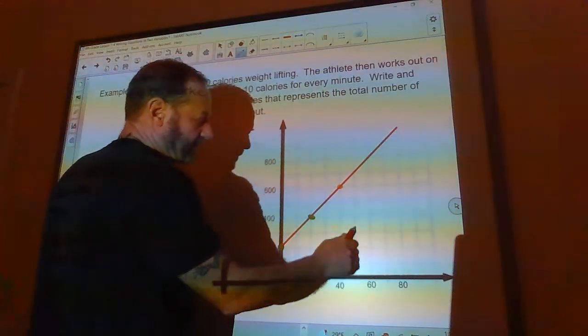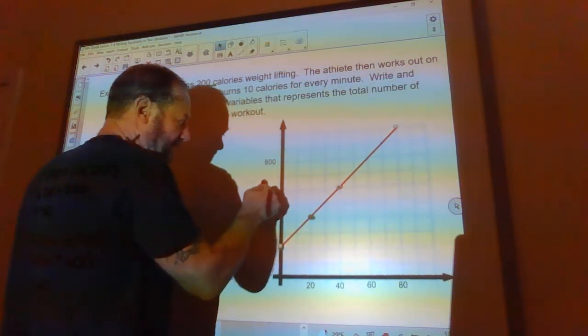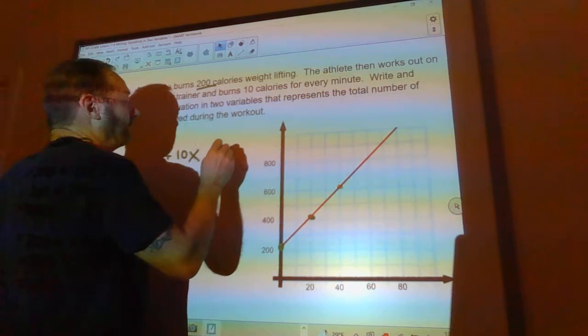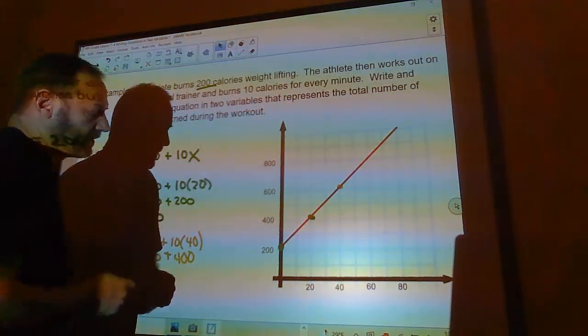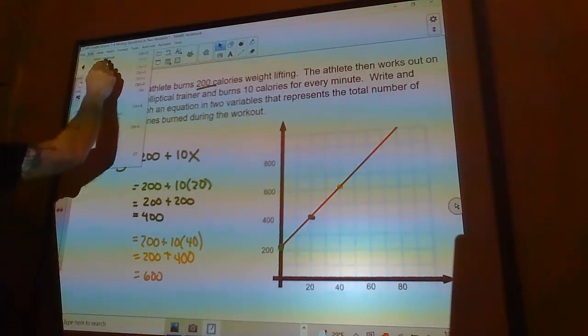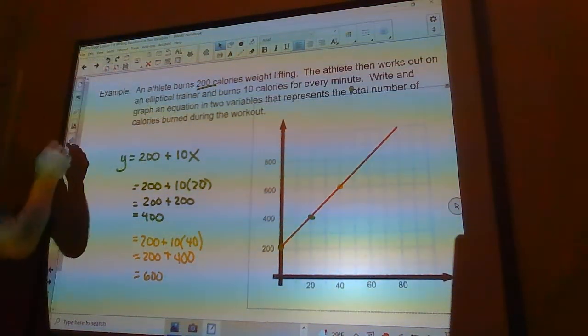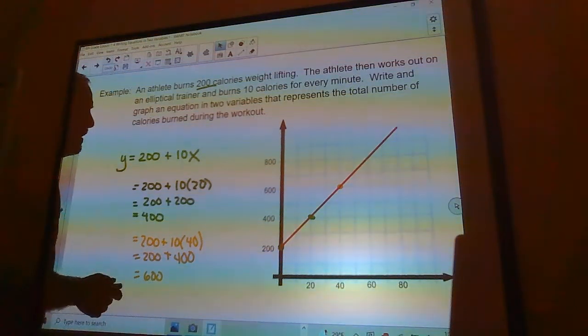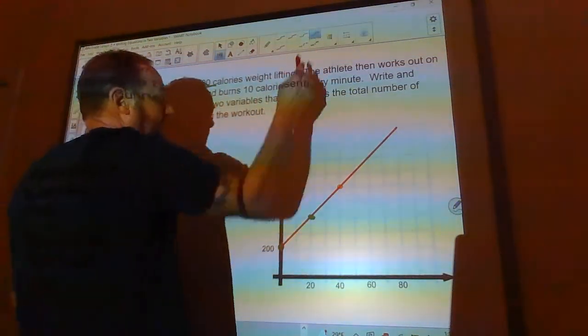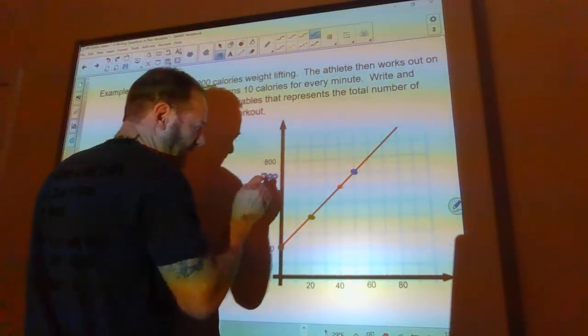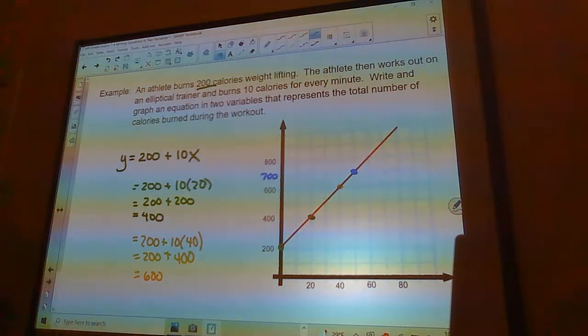It would be right here. That would be 700 calories. That would be right here. That'd be 700. And I can check on a graph really quickly how many calories I would burn.